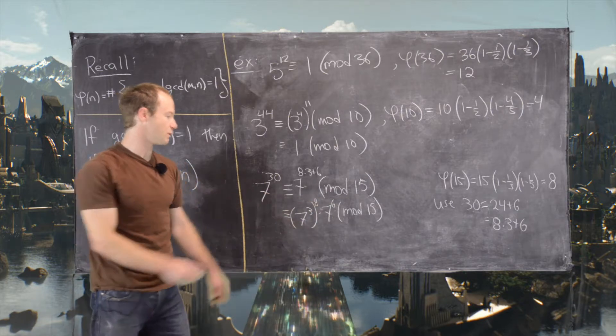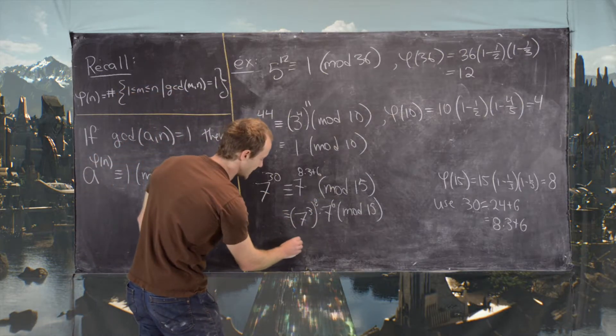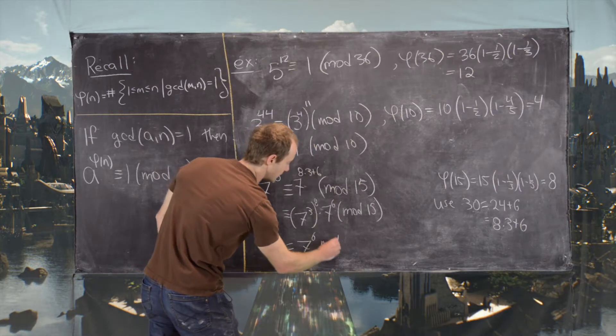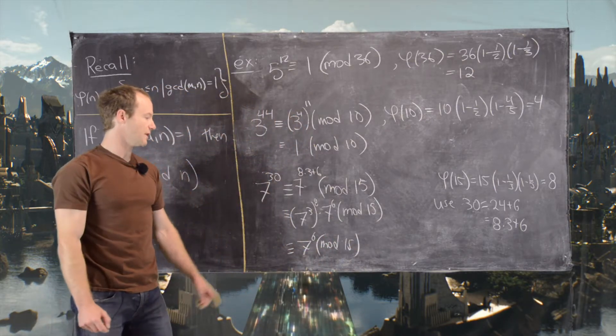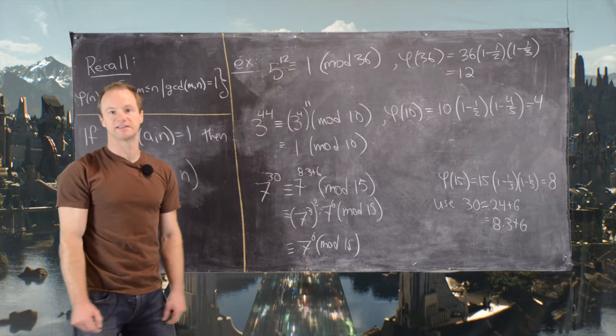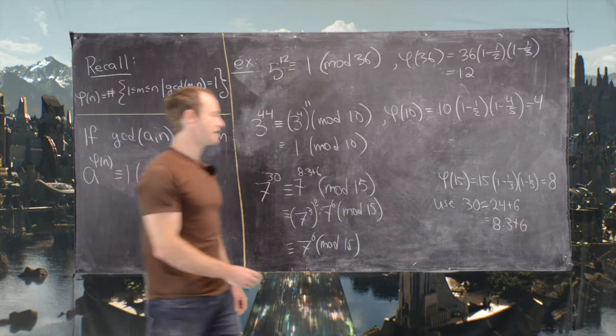Now we know that this part is 1, so that means this whole thing is 7 to the 6 mod 15. So what we need to do now is simplify this 7 to the 6.